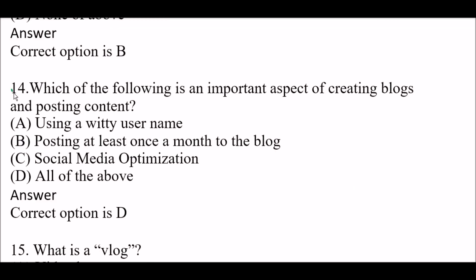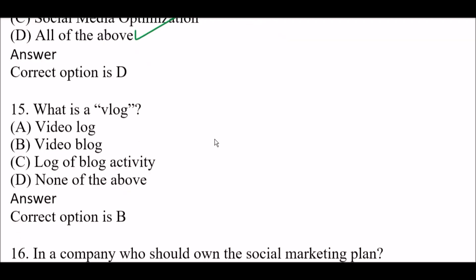Next question: which of the following is an important aspect of creating blogs and posting content? Option A: using a video username. Option B: posting at least once a month to the blog. Option C: social media optimization. Option D: all of the above. Right answer is Option D: all of the above.